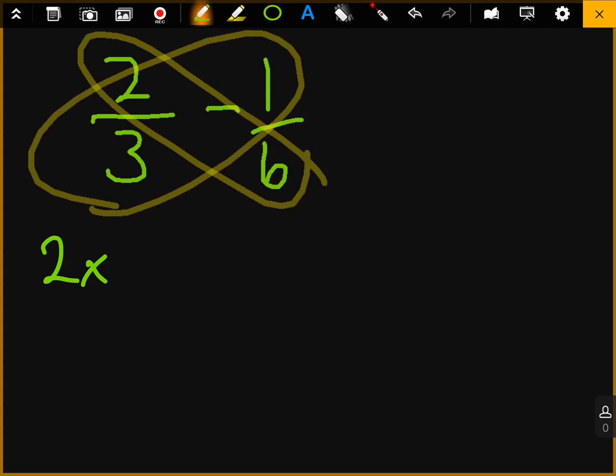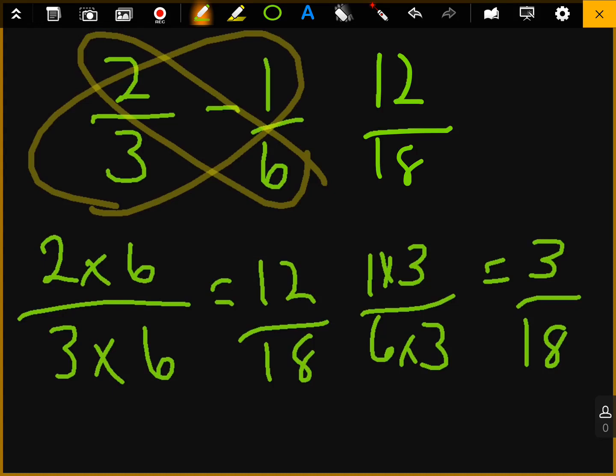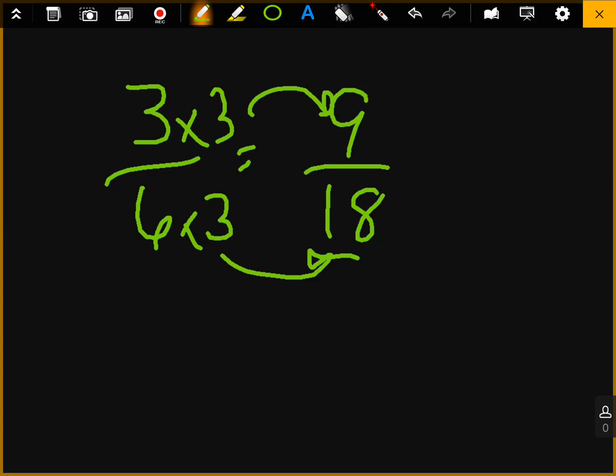Now, if you did this, the butterfly method, if you did 2 over 3 minus 1 over 6, and you did 2 times 6, 3 times 1, it would be 2 times 6, 3 times 6, which equals 12 over 18. And it would be 1 times 3 and 6 times 3, which would equal 3 over 18. And then when you did 12 over 18 minus 3 over 18, that would get you 9 over 18, which would be the same as 3 over 6. 3 over 6 is the same as 9 over 18 because if you were to multiply these by 3, it would still equal the same as this. So those fractions are equivalent to each other.